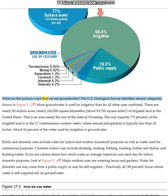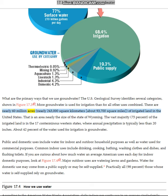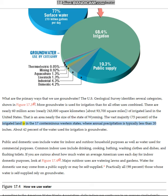The U.S. Geological Survey identifies several categories of groundwater use, shown in Figure 17.3. More groundwater is used for irrigation than for all other uses combined. There are nearly 60 million acres — nearly 243,000 square kilometers (about 93,700 square miles) — of irrigated land in the United States, an area nearly the size of the state of Wyoming. The vast majority, 75%, of the irrigated land is in the 17 contiguous western states, where annual precipitation is typically less than 20 inches. About 42% of the water used for irrigation is groundwater.